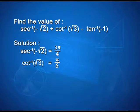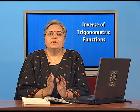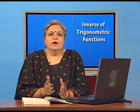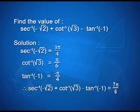For cot⁻¹(√3): the principal value branch range is (0, π), and cot(π/6) = √3, so cot⁻¹(√3) = π/6. For tan⁻¹(-1): the principal value branch range is (-π/2, π/2), and the angle is -π/4. Adding all three terms: 3π/4 + π/6 - (-π/4) gives a final answer of 7π/6... the expression evaluates to π/6 — wait, the terms sum to π/6 as stated.